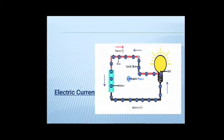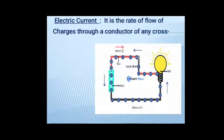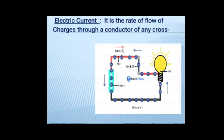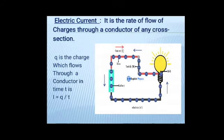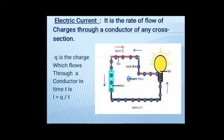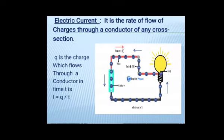Now let us study about current. What is current then? It is the rate of flow of charges through a conductor of any cross section. If Q is charge, which flows through a conductor in a time T, then I is equal to Q divided by T.